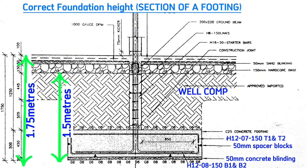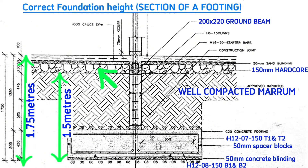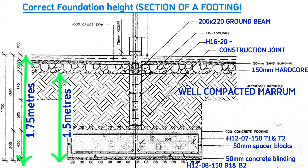This part is filled with well-compacted maram. The ground beam is at the same level as the hardcore. At this stage you can either use hardcore or stone base, also called base coat. There is a construction joint where you can put a kicker, and these are the column starter bars. The key point is to always ensure the foundation height is above one meter from the natural ground to the bottom of the base.